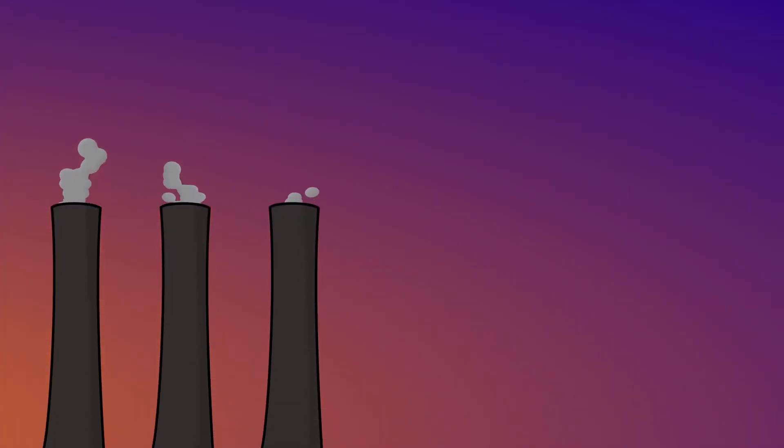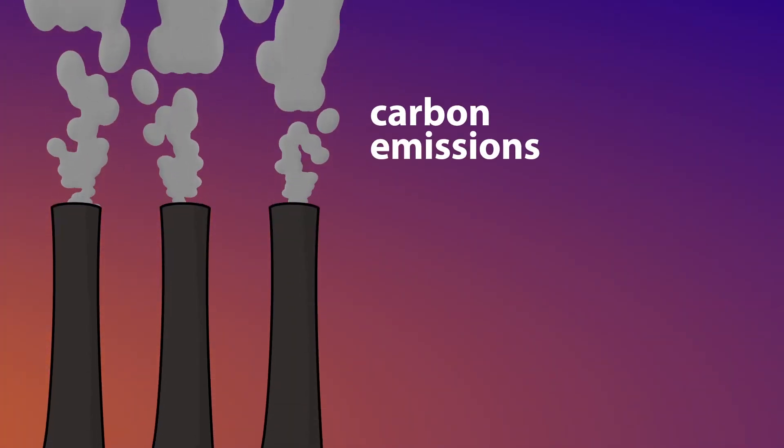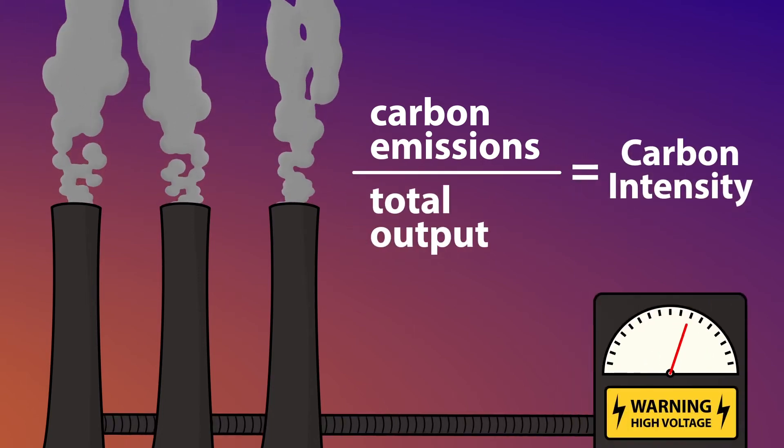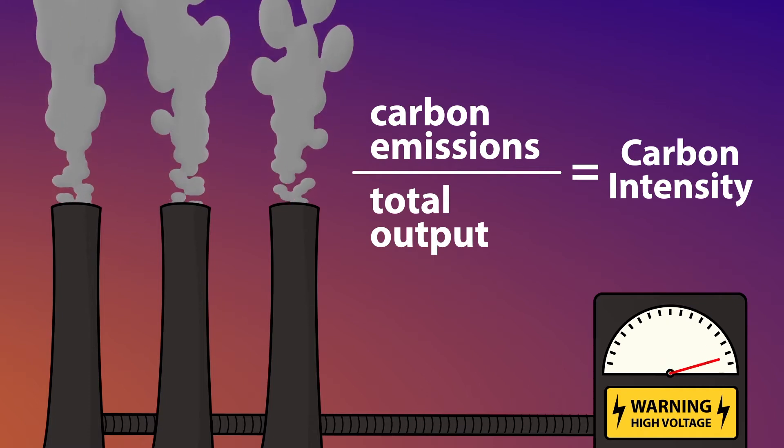We're adding new power plants — natural gas, renewables — so the grid is changing and we want to track that. The Power Sector Carbon Index is an open and transparent tool that allows anybody to understand how emissions have changed over time and how the power sector has been changing. We assembled a large dataset that includes how much emissions come out of every single power plant in the United States, divided by the total generation produced by all those power plants in that same year.